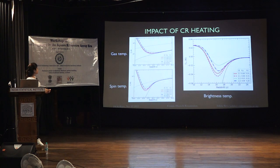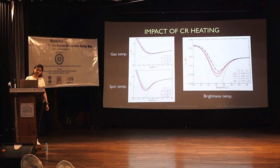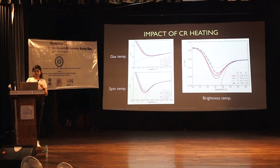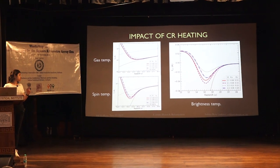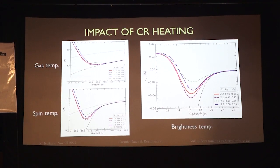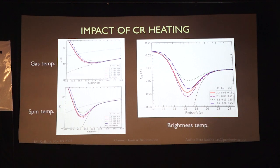We then calculate the impact of these cosmic ray protons on the gas temperature, spin temperature, and the corresponding brightness temperature. In our model, we have different parameters: u is the spectral index of the cosmic ray spectrum, epsilon_3 is the efficiency of cosmic rays coming from Pop 3 stars, and epsilon_2 is the efficiency from Pop 2 stars. We vary these parameters to check the dependency on the heating of the intergalactic medium. Here we have not considered any other heating mechanisms like X-ray — only cosmic ray heating is present.